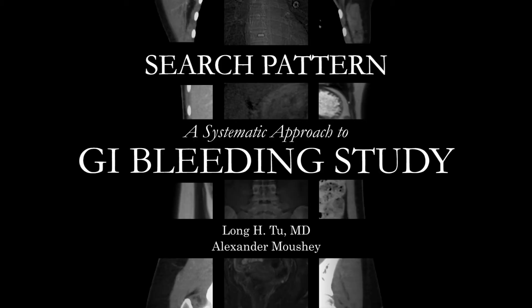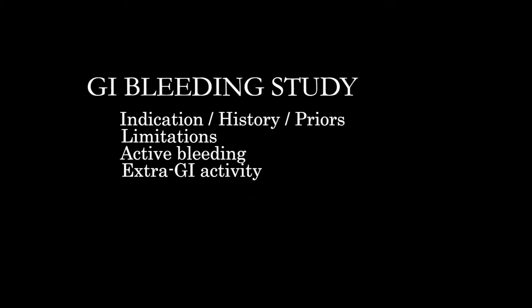Today we're going to talk about a basic approach to the scintigraphic GI bleeding study. This can be used to look for lower gastrointestinal bleeds and is sensitive for slow or intermittent hemorrhage. It's going to be pretty important to get a sense of the patient anatomy and be aware of potential pitfalls in this sort of study.